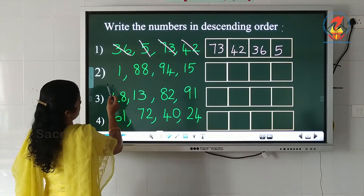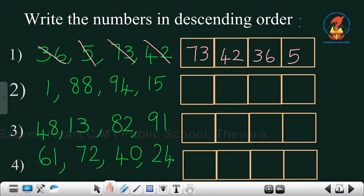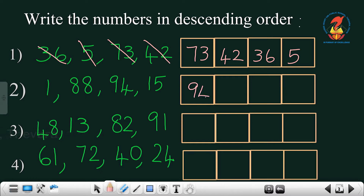Second question: read the numbers 1, 88, 94, 15. Among these four numbers, which is the biggest? It's 94, so we write 94 and strike that number. The remaining three numbers are 1, 88, and 15. Which is the biggest? 88 is the biggest, so we write 88 and strike it.